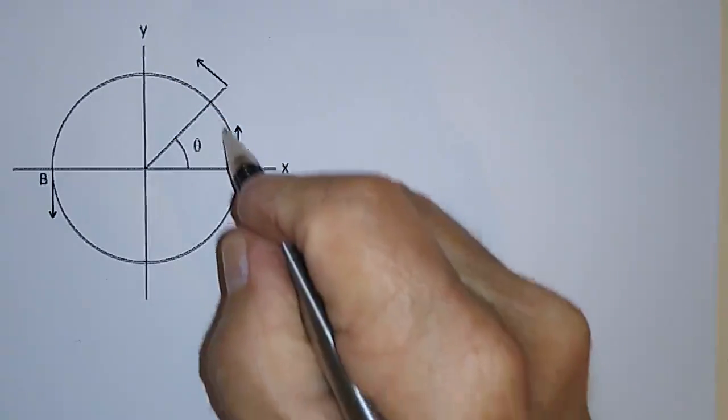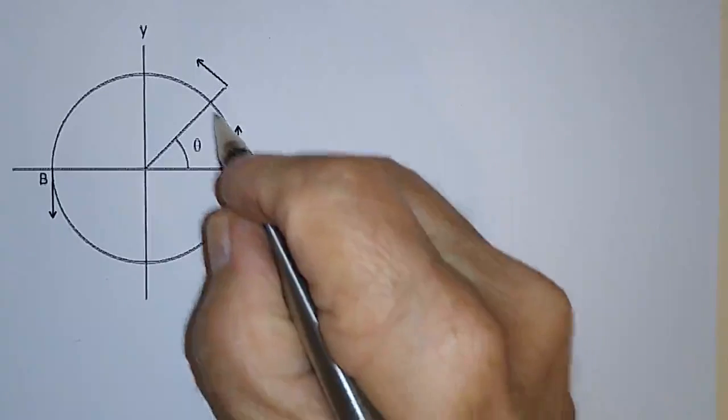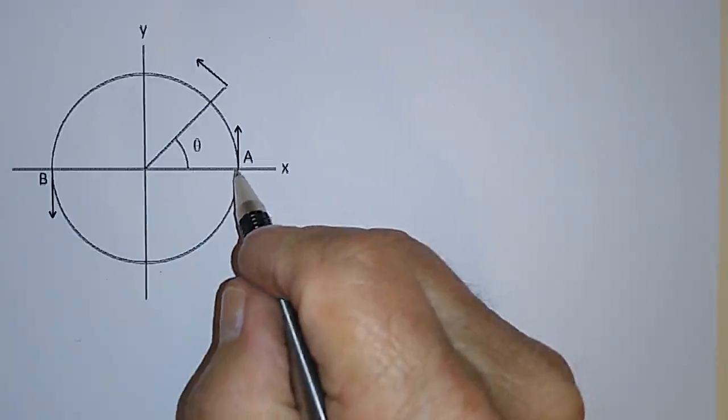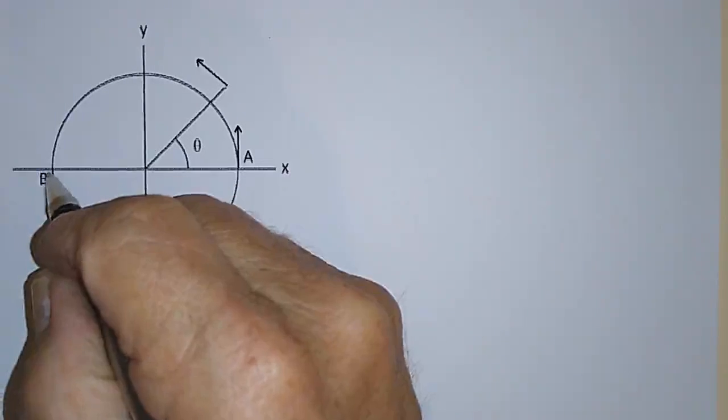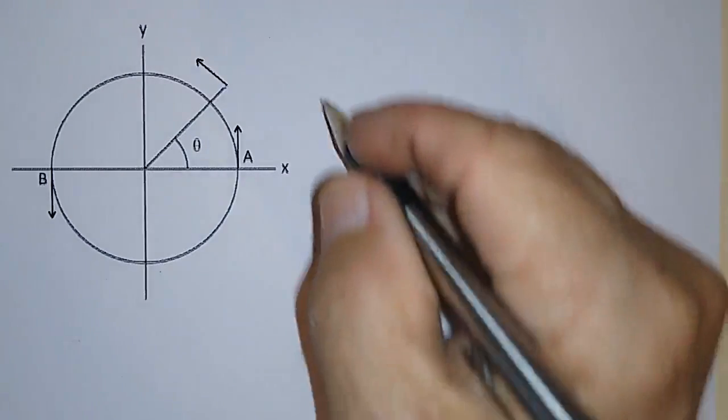meaning that it has a constant speed in the circle, the velocity, however, is not constant, and it starts out at A and ends up at B. The question is, what is the average acceleration? Not the centripetal acceleration, but the average acceleration.